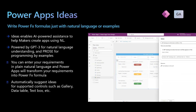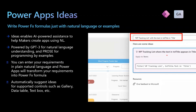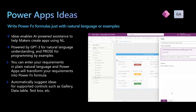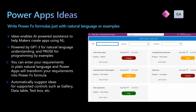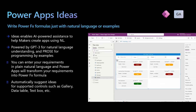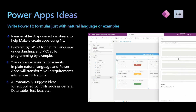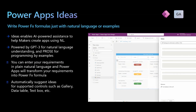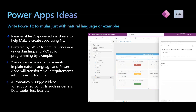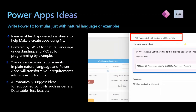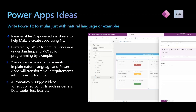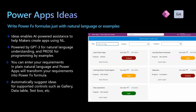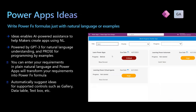There are two methods mainly. The first method transforms natural language to a Power FX formula. For example, you can say 'show me accounts in United States and sort this list by account name,' and the Ideas feature will generate a formula which you can apply to your gallery.